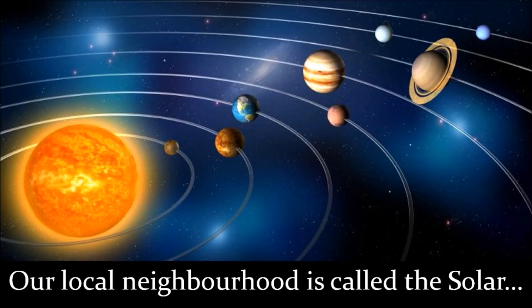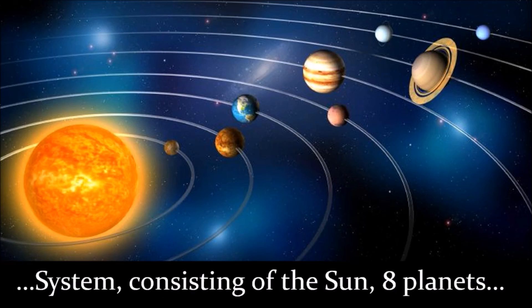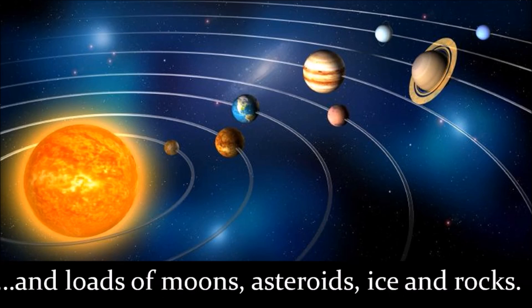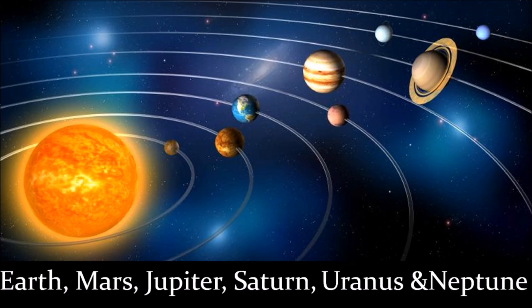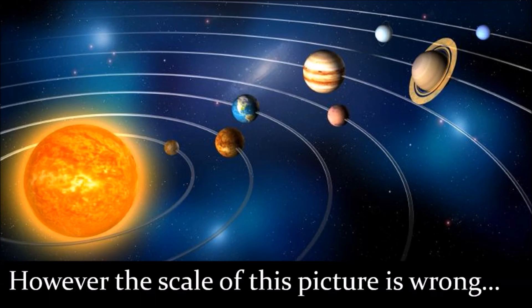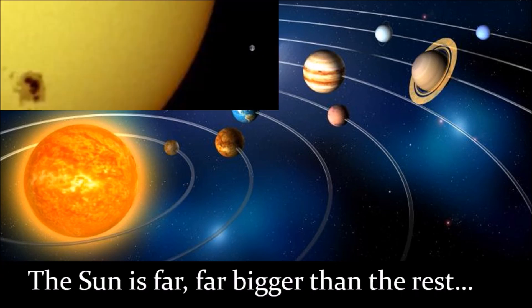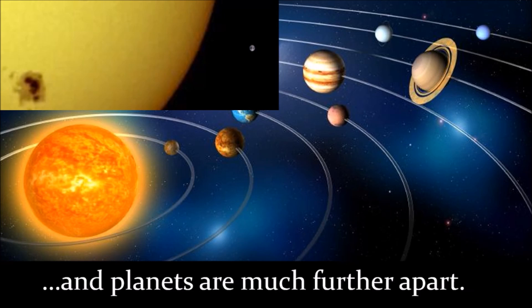Our local neighbourhood is called the solar system, consisting of the Sun, eight planets, and loads of moons, asteroids, ice and rocks. From left to right you see the Sun, Mercury, Venus, Earth, Mars, Jupiter, Saturn, Uranus and Neptune. However, the scale of this picture is wrong — the Sun is far, far bigger than the rest, and planets are much further apart.